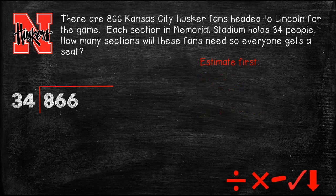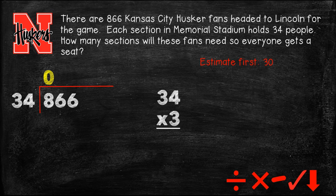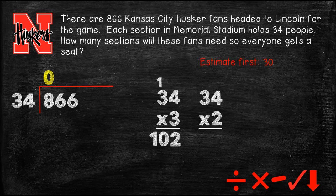I'm going to write divide, multiply, subtract, check, and bring down on my paper so I remember all the steps to the standard algorithm. There is no way that 34 goes into 8, so we put a zero above the 8 — we'll erase it later. Now we need to decide how many times does 34 go into 86. From our estimate we saw a 3 in the tens column, so let's try 34 times 3: 4 times 3 is 12, carry the 1; 3 times 3 is 9, add 1 is 10 — so 34 times 3 is 102. That's too big for 86, so let's try 34 times 2: 4 times 2 is 8, 3 times 2 is 6 — perfect. Our first digit on top is 2.